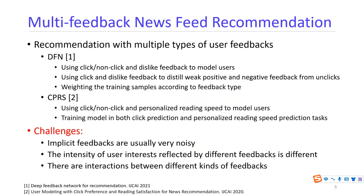There are also existing works using multiple feedbacks. For the DFN approach, they use click, non-click, and dislike feedback to model users, and use the click and dislike feedbacks to distill positive and negative feedback from non-clicks. For the CPRS method, they use click, non-click, as well as personalized reading speed derived from content length and dwell time of users to model users, and train models on both click prediction and personalized reading speed prediction tasks.